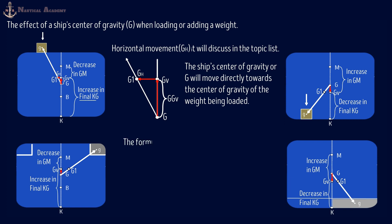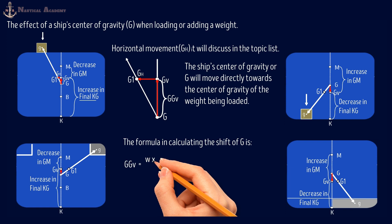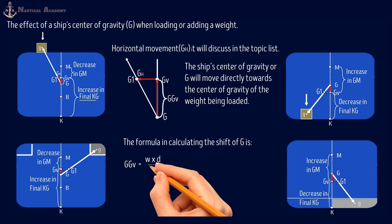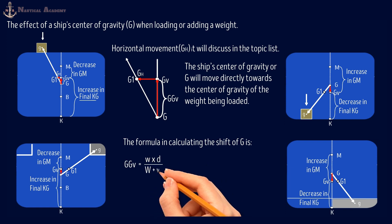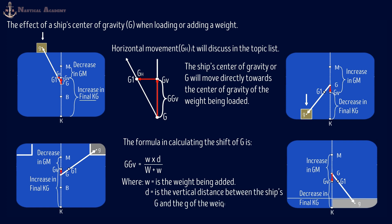The formula for calculating the vertical rise or fall of G is: GGv = (weight added × distance) ÷ (ship's displacement + added weight). Where small w is the weight being loaded, small d is the vertical distance between the ship's G and the G of the weight being loaded, and capital W is the ship's displacement.